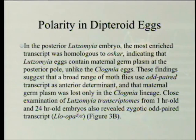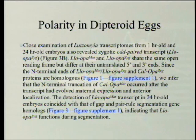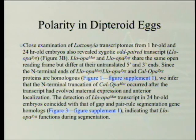Regarding the evolution of the anterior determinant function of moth-fly odd-paired: maternal odd-paired transcript is absent in freshly deposited eggs of chironomids and mosquitoes, both belonging to the Culicomorpha lineage. To test whether a localized maternal odd-paired transcript is broadly conserved in the Psychodomorpha lineage, the researchers examined the sandfly Lutzomyia longipalpis — a moth-fly species of public health concern as a vector of visceral leishmaniasis. Of 5,392 annotated transcripts, the most enriched maternal transcript in the anterior half of one-to-two hour old embryos was homologous to odd-paired, named LLO-opa maternal.